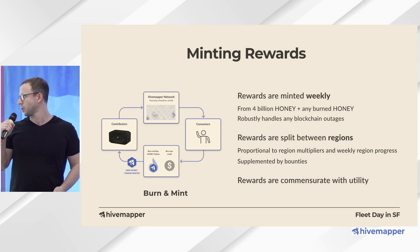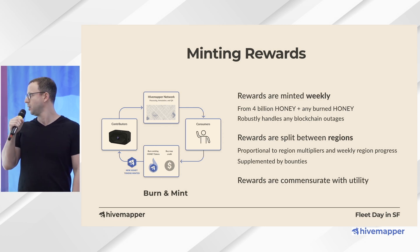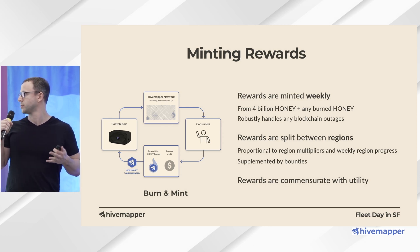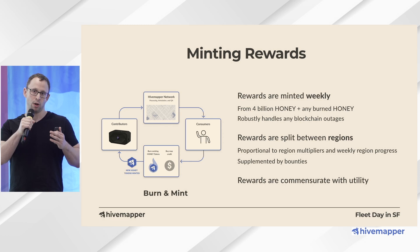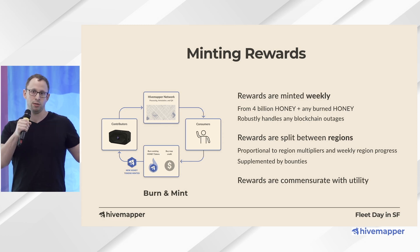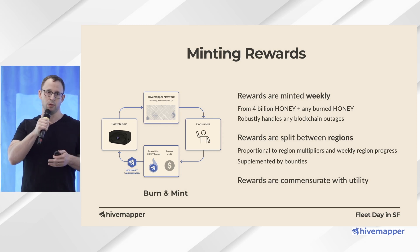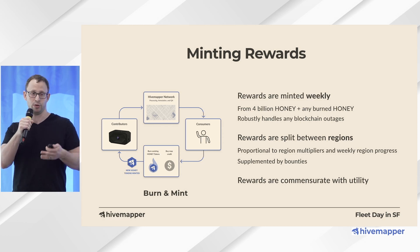We have something called a region multiplier, which we'll go into in a little more detail in a minute, as well as something called map progress. Map progress can be realized in any region and that determines how many tokens are minted, rewarded, and distributed to the contributors there.